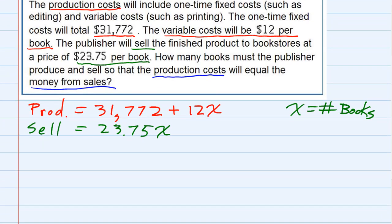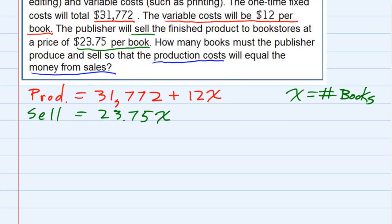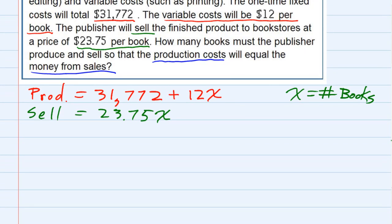We're told that these production costs and sales costs are equal. We're asked to find out how many books that would be. That's our setup. We're going to take the production cost, which is $31,772 plus 12X.